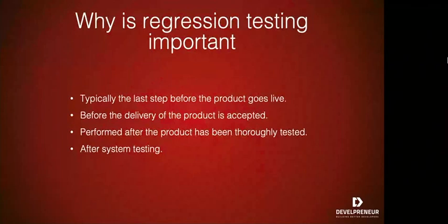Why is regression testing important? Regression testing increases our chances of detecting bugs caused by changes to a software application, either through enhancements or defect fixes. Regression testing also detects undesirable side effects that can be caused when we change an operating system, a browser, or a different mobile device. So regression testing takes the software as a whole and retests it against many different aspects.